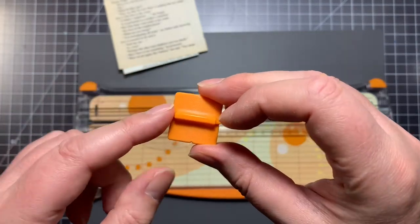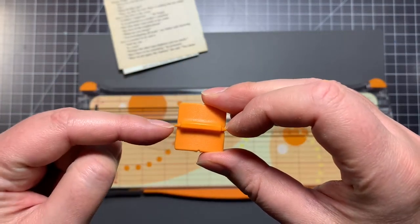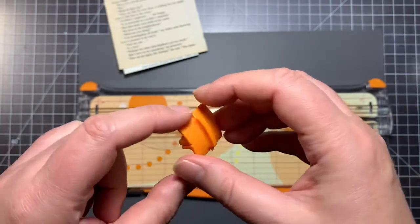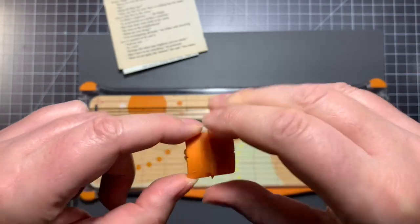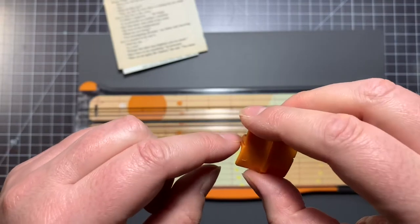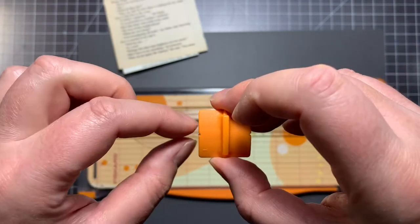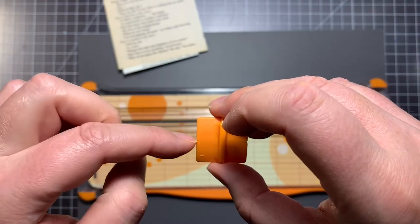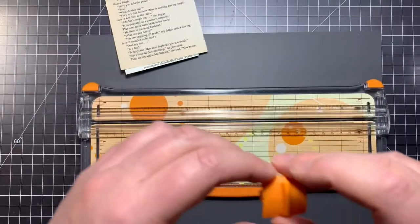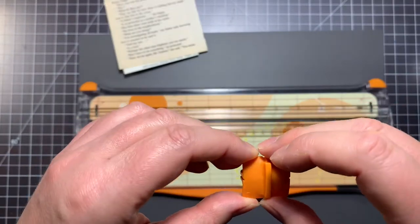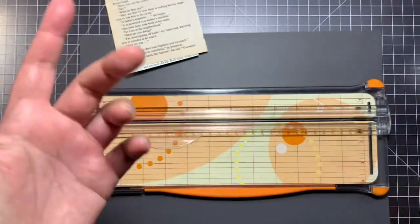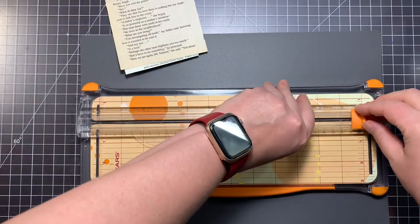And these pointers actually are going to show you where the line is going to be. Actually, this right here is going to show you where the cutting line is going to be. So this is what you want to line up if you have a line that you need to cut down. I don't know what these two pointers are for. If someone knows, you can put it in the comments below.